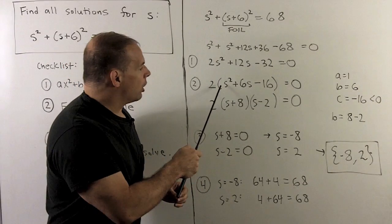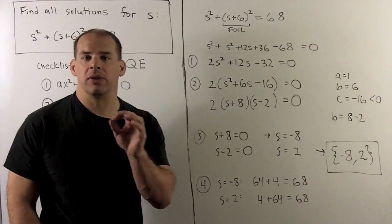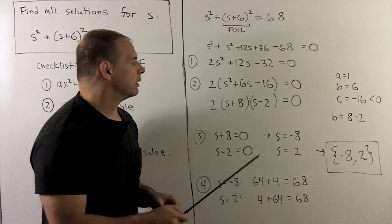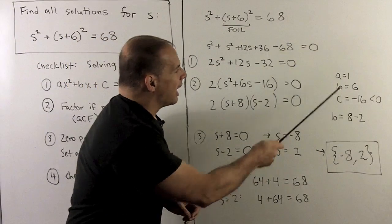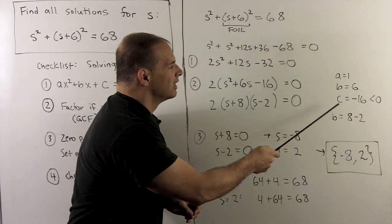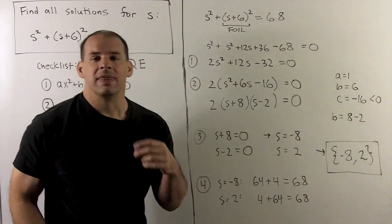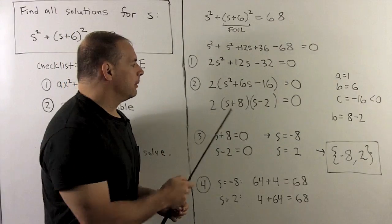Now, the lead coefficient's a one, so I don't need to go to the AC method. We could do this mostly by observation. I have A equal to one, B equal to six, C equal to minus 16. So that's less than zero. That means our sign pattern is going to be plus minus.